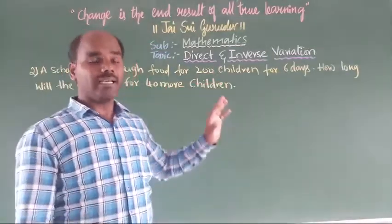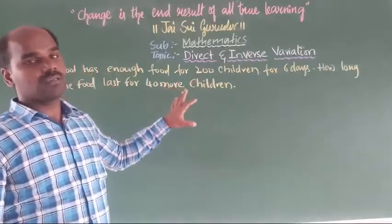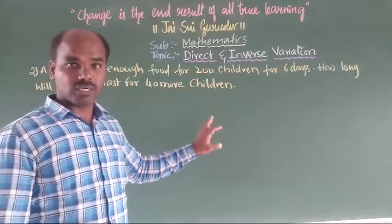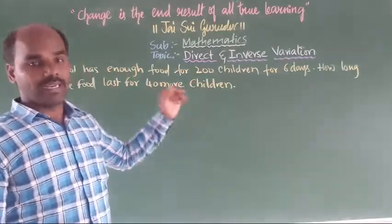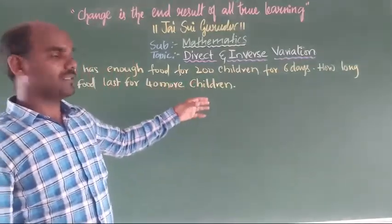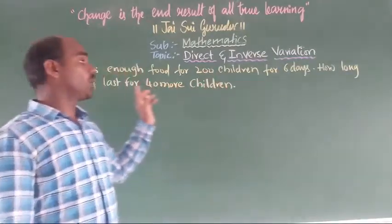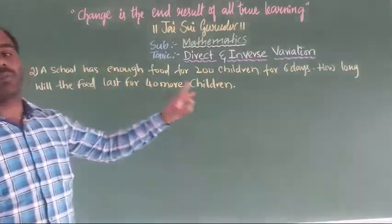It is indirect variation — inverse variation. Based on that, how do we find how long the days will be?